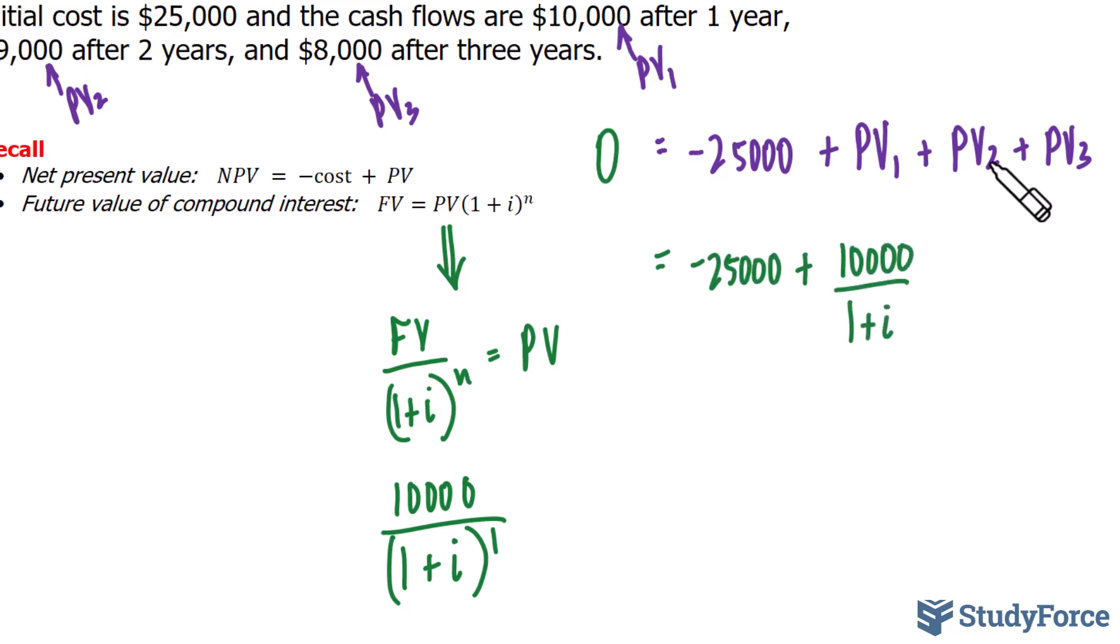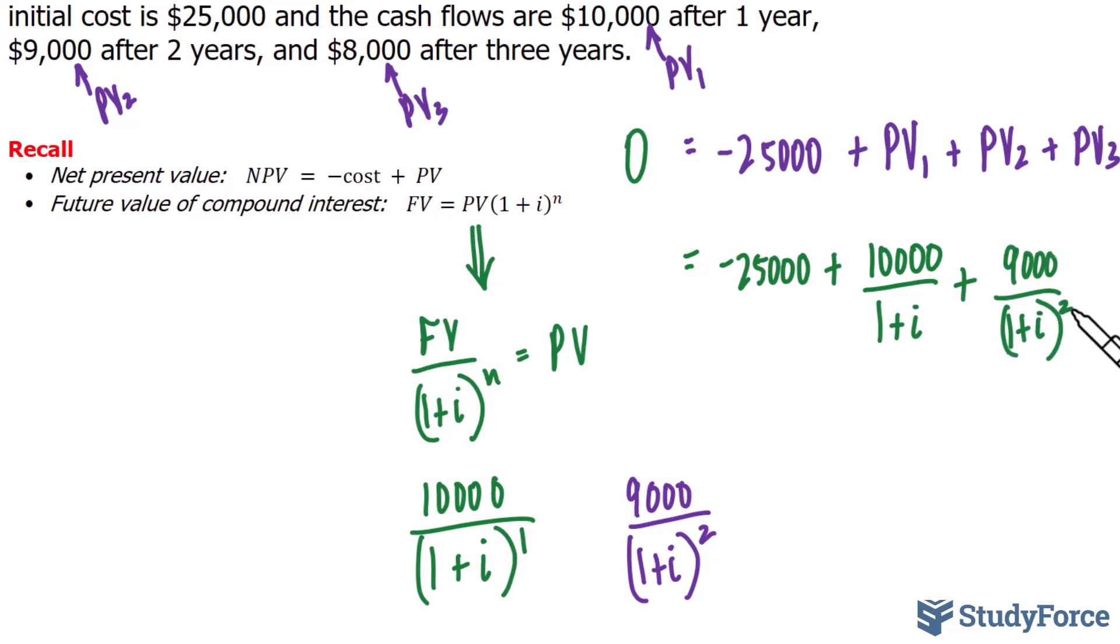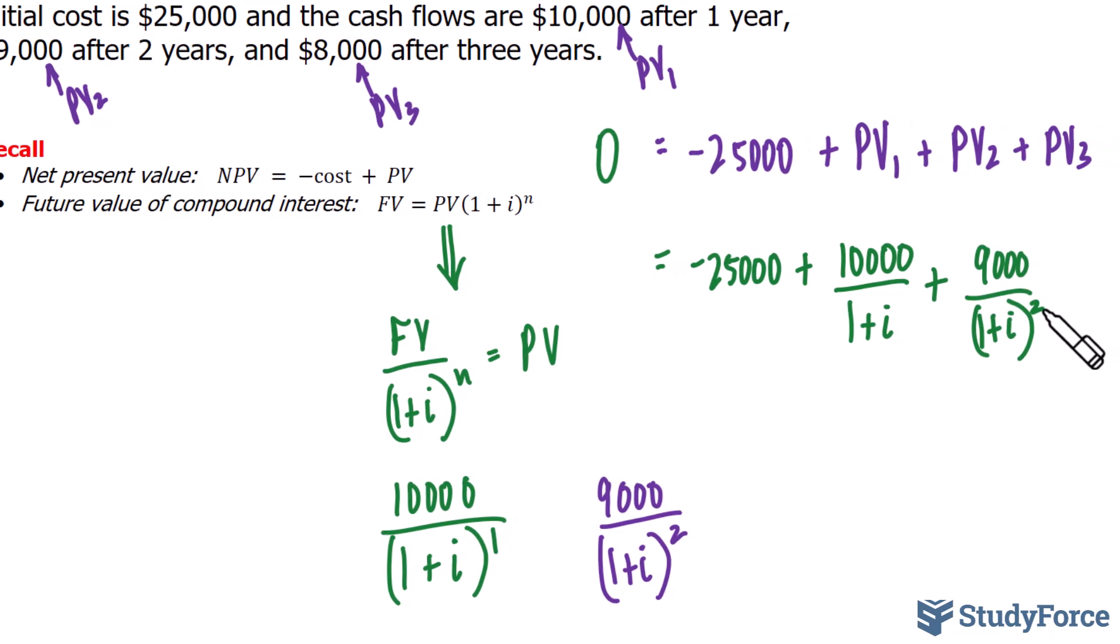Now to find the second present value, that's for 9,000, I'll take 9,000 divided by 1 plus i, and that's being raised to 2, since it's 2 years from today. So I'll include that into my equation, and the same thing can be said for 8,000, but the exponent will now be a 3.